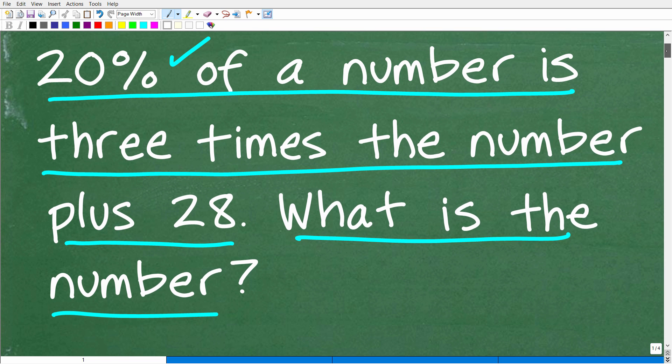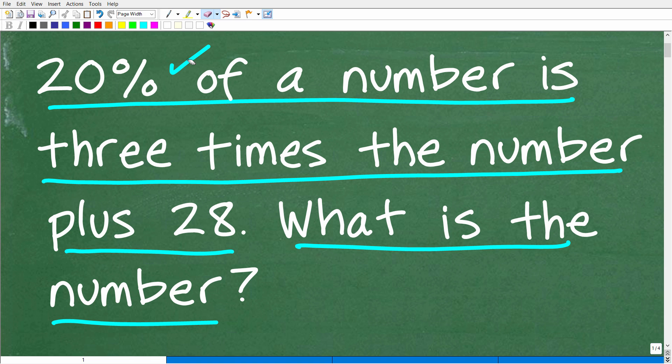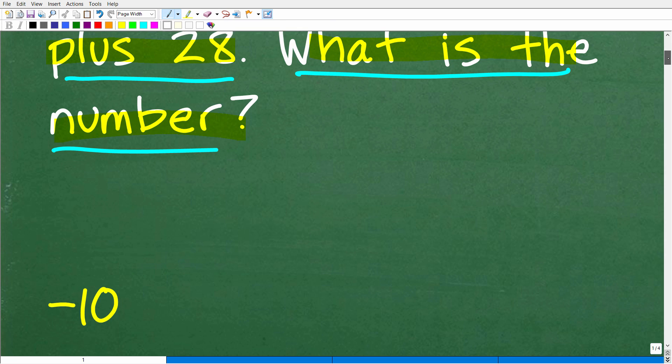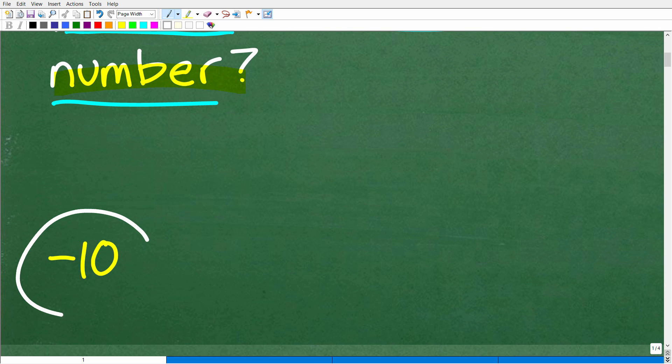All right, so let's go ahead and take a look at the question one more time before we see the answer. So 20% of some number is three times that number plus 28. What is this number? Let's go ahead and take a look at the answer. The correct answer is negative 10.